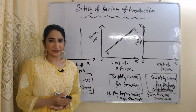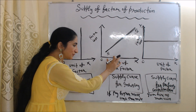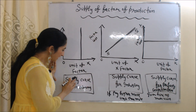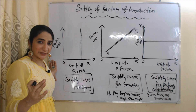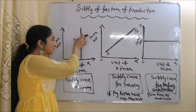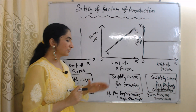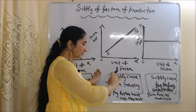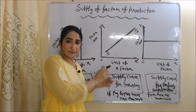Now we are going to talk about supply of factors of production. Here we have three diagrams. On the x-axis of all diagrams we have units of the factor, and on the y-axis we have factor cost. The first diagram represents the supply curve in the economy. At a particular time period, the supply of a factor is fixed in the economy, which is why the supply curve in the economy is vertical in shape. The second diagram represents the supply curve for the industry, where the slope is upward, because if the industry pays a higher price for a factor, more and more units will shift into that industry.